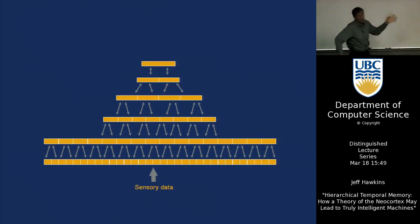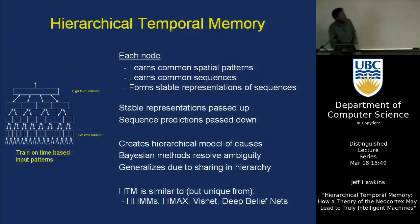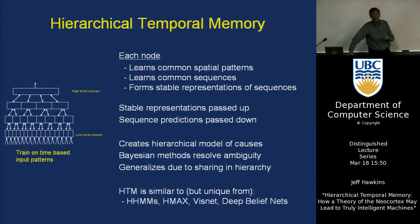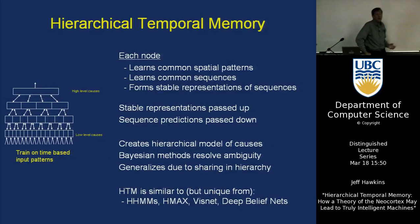We call it Hierarchical Temporal Memory, and each node in the hierarchy — here I've shown a little caricature of a converging hierarchy — we feed in a time-based data stream. It's really important that you see things moving through time; that's part of the theory. What does each node do? Remember, I'm arguing that every little box in this hierarchy is doing the same thing — a lot of people believe that. So what is an individual node doing?